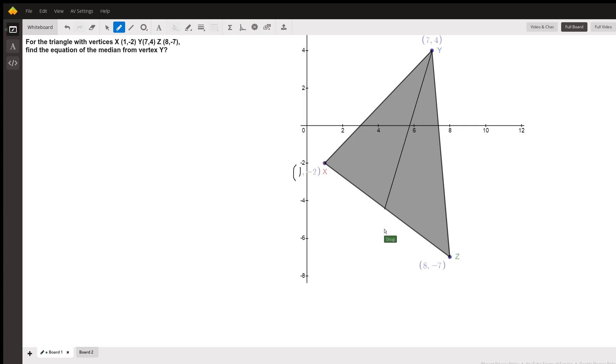But in order to find the equation of that line, to find the equation of any line, you need to know its slope and at least one point that the line passes through. So we're going to have to find this point right here so that we can calculate the slope.